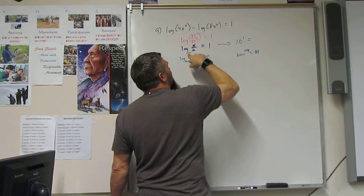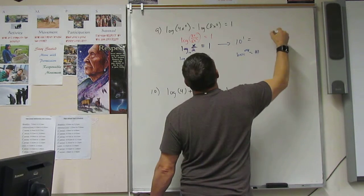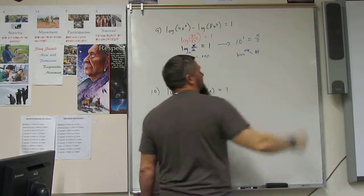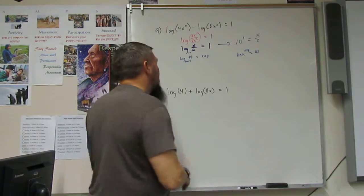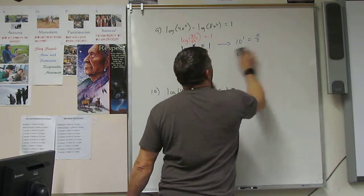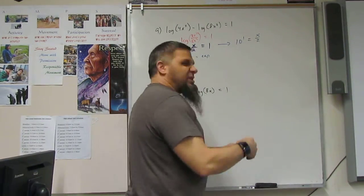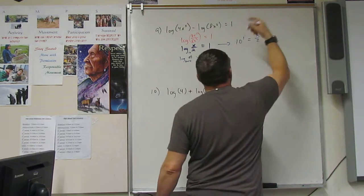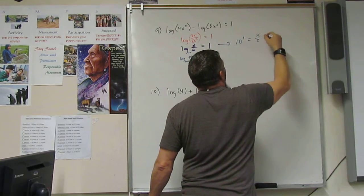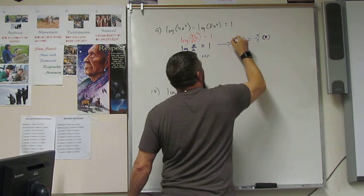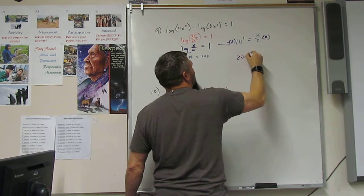The base raised to the exponent is equal to the number x over 2. And so from there, I can solve it. 10 to the 1 is 10. And then I multiply both by 2. And I get 20 is equal to x.